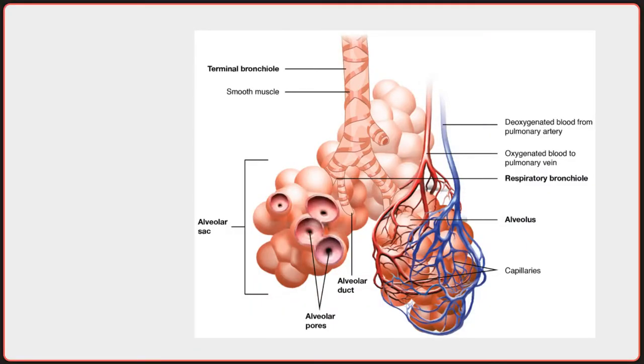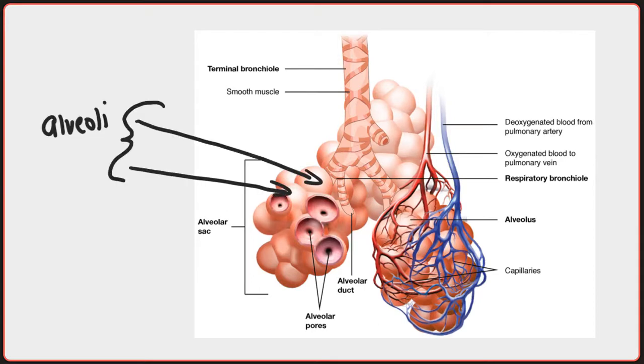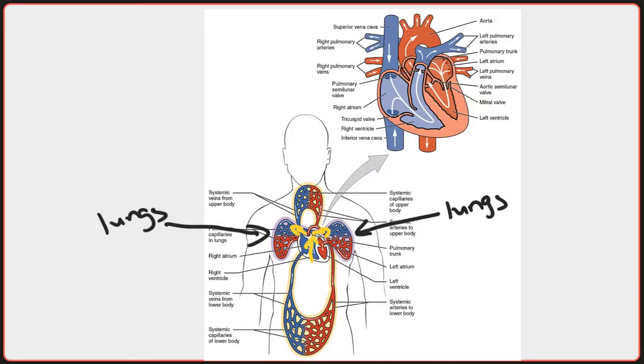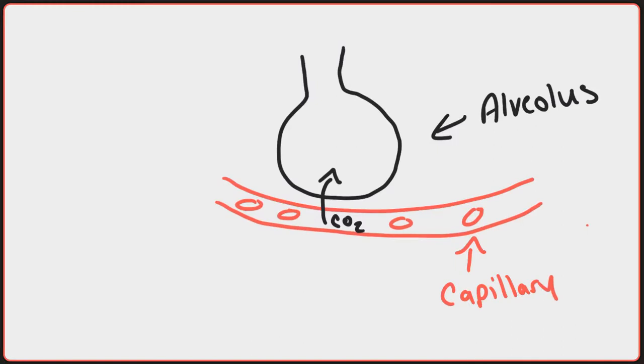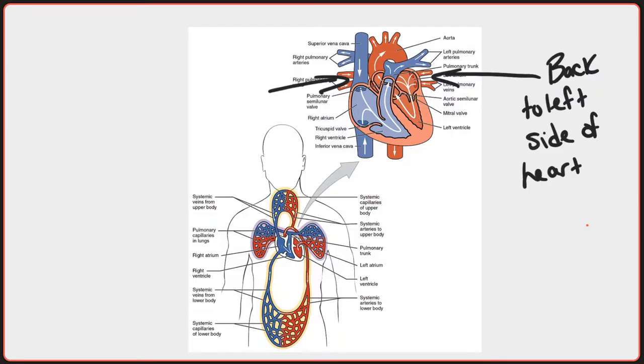Gas exchange occurs between the alveoli and the capillaries that surround them. Deoxygenated blood from the heart comes to the lungs via the right side of the heart through the pulmonary artery and then enters into tiny capillaries within the lungs. The blood in the capillaries will then release carbon dioxide into the lungs to be exhaled and pick up oxygen that has been inhaled. This oxygenated blood then goes back to the left side of the heart to be pumped throughout the body, delivering oxygen and nutrient-rich blood to all the tissues.